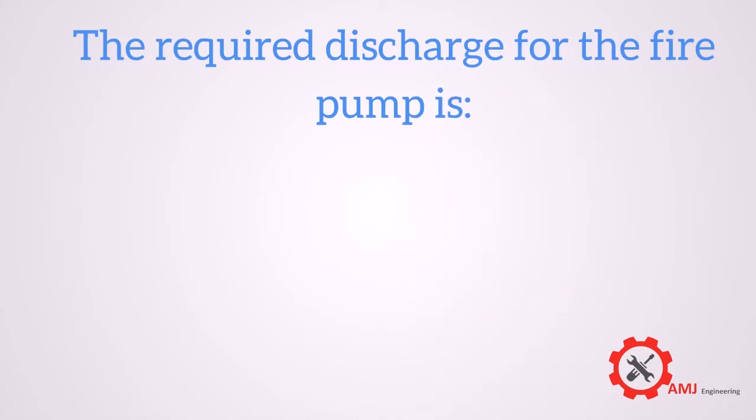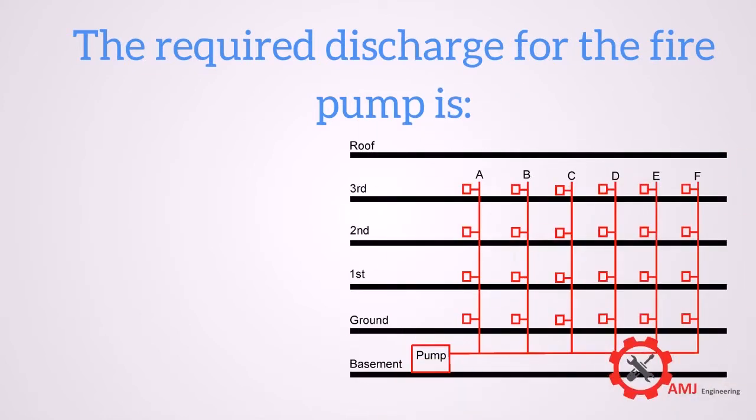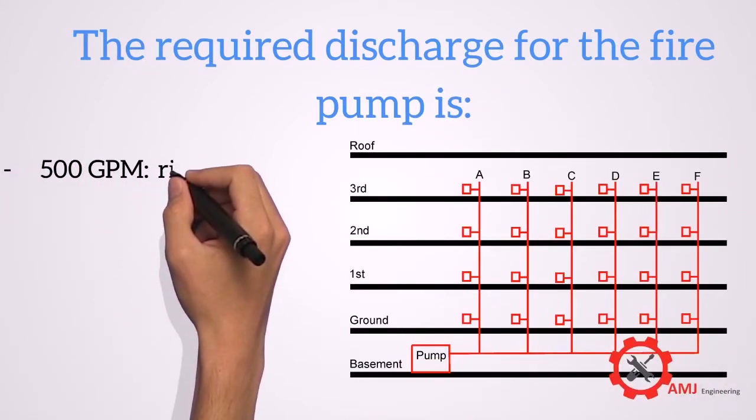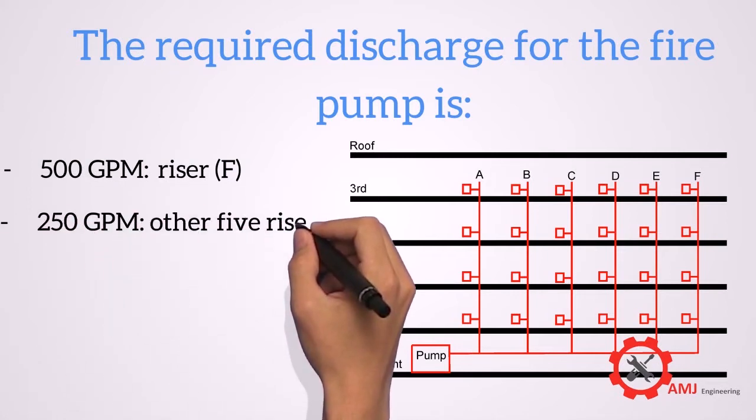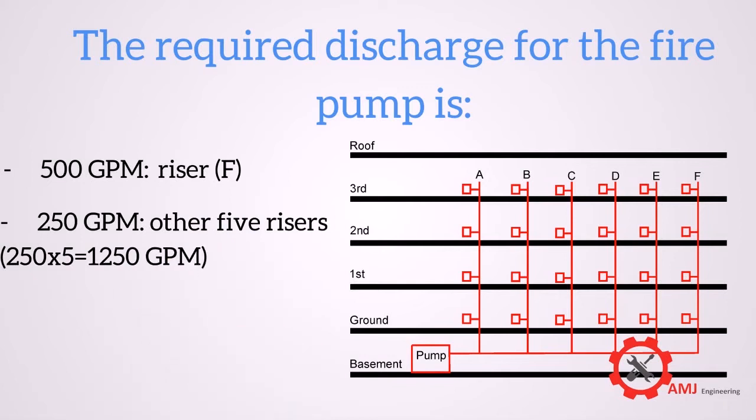The required discharge for the fire pump is: 500 GPM required for the most remote riser, and 250 GPM required for each riser of the other 5 risers.